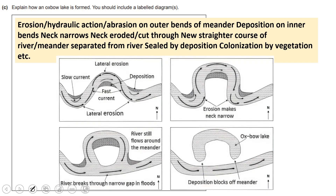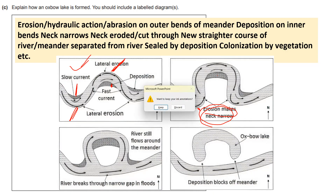Using a diagram: lateral erosion takes place at the outer bend while deposition occurs at the inner bend. As erosion continues through hydraulic action and abrasion, the neck of the meander becomes very narrow. The river breaks through the narrow gap — usually during flooding — and further deposition and vegetation growth cut off this section, which is now called an oxbow lake. That is it for day nine — thank you.